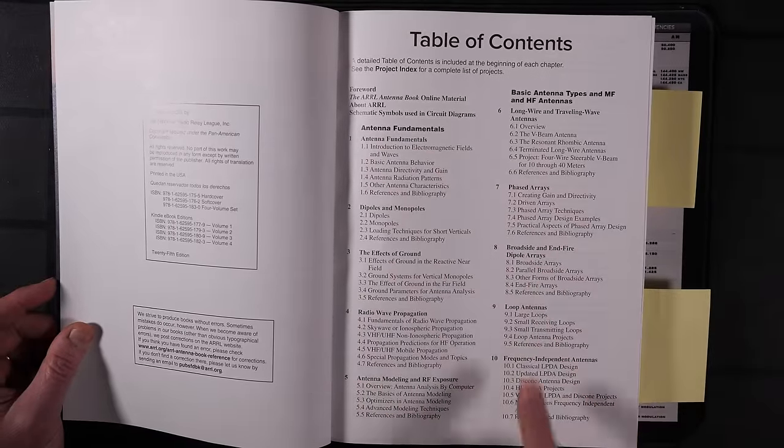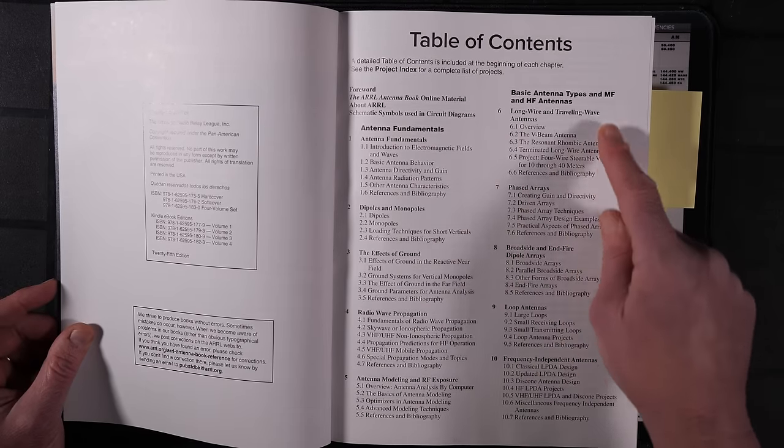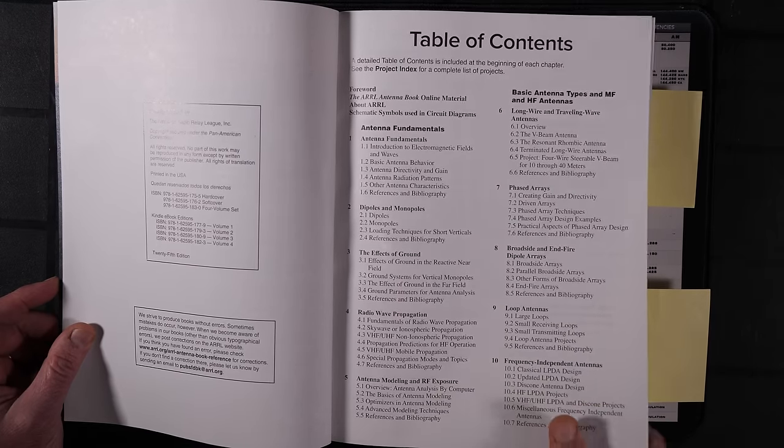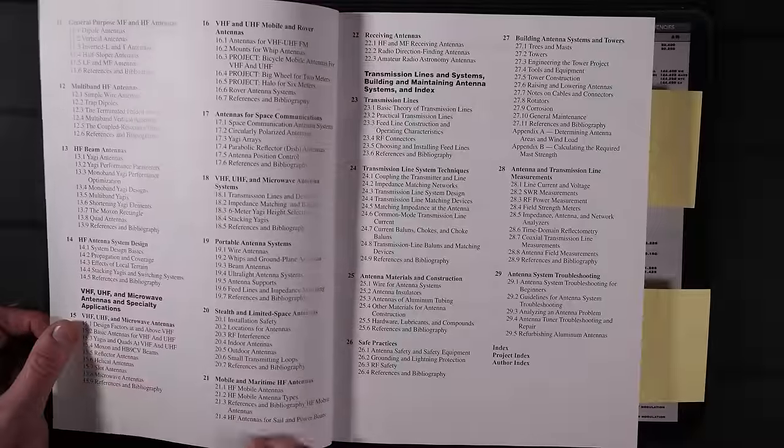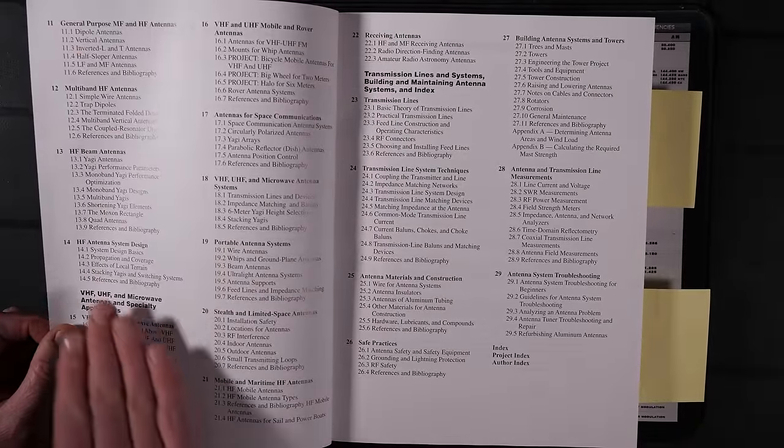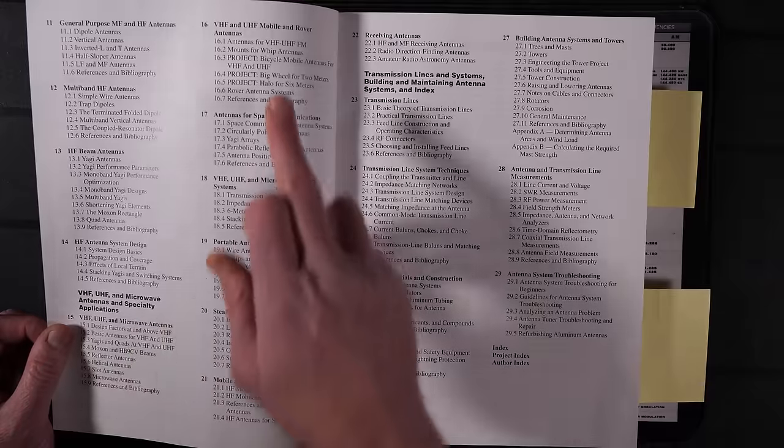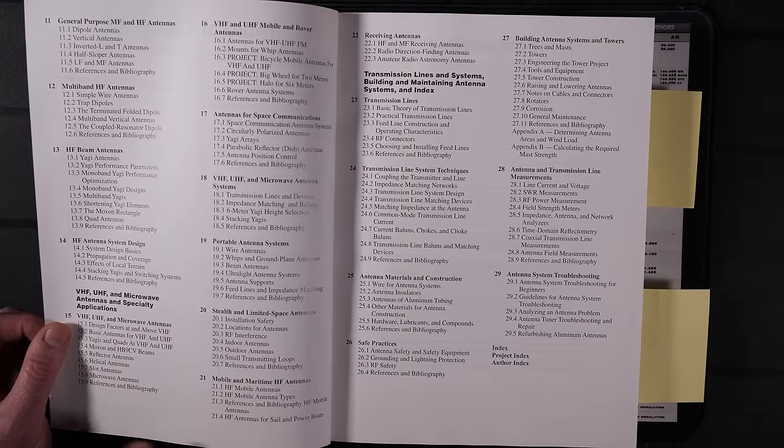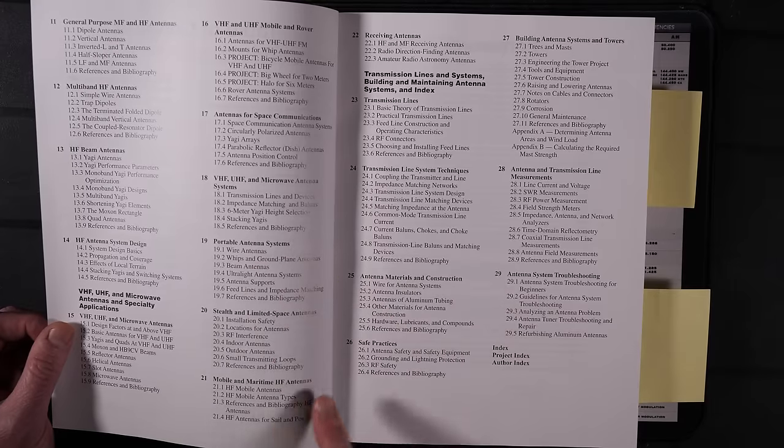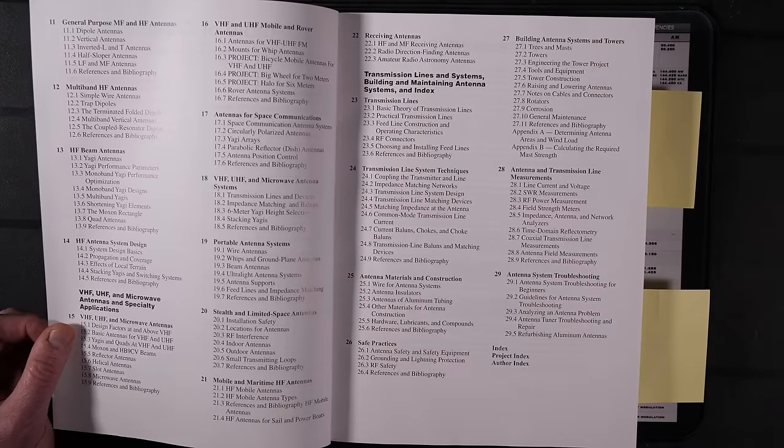What is available in this book starts off with antenna fundamentals. It talks about those basic antenna types for medium frequency and high frequency, long wires, phased arrays, broadside loops, frequency-independent antennas, general-purpose antennas, including your dipole, multi-band HF antennas, beam antennas.